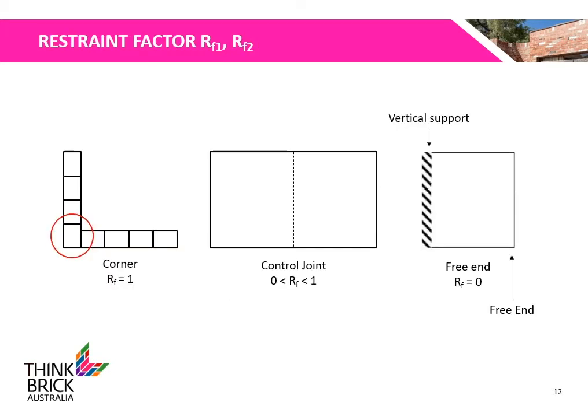Here is a diagram of the different cases for restraint factors. For corners, the restraint factor is 1. For control joints, the restraint factor ranges between 0 and 1. For free ends, the restraint factor is 0.